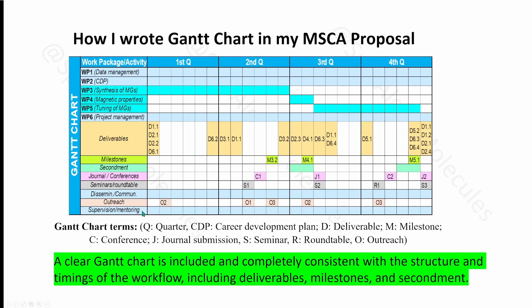I added a supervision and mentoring section for PhD or master's students in my host lab, continuing for 24 months. I also included a legend explaining the abbreviations used in the Gantt chart: Q is for quarter, CDP for career development plan, D for deliverable, M for milestone, C for conferences, J for journal publication, S for seminar, R for round table, and O for outreach.